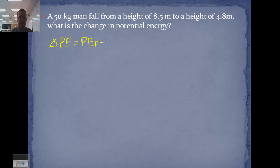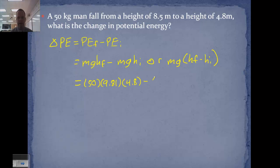So this will be mgh final minus mgh initial, or you could write this mg times h final minus h initial since m and g are the same. We pull those both out of the equation.